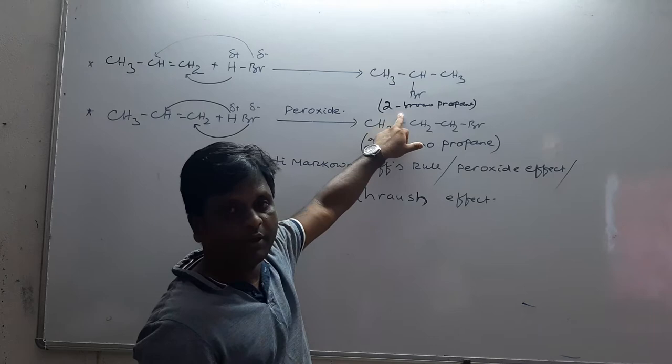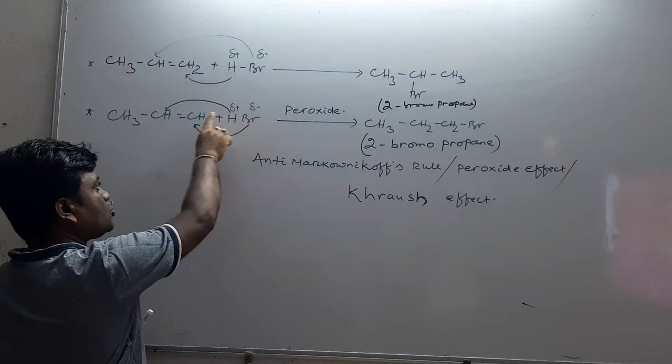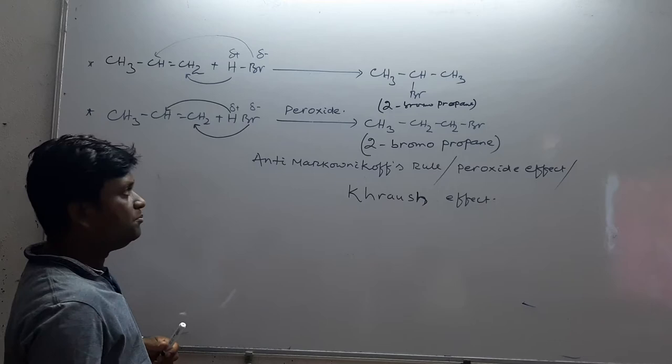If we have a catalyst like peroxide, we can do anti-Markovnikov addition. The halogen or negative part goes to the carbon atom opposite to the usual carbon atom.